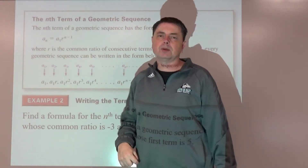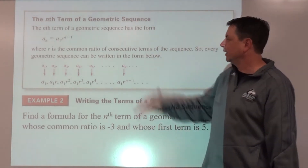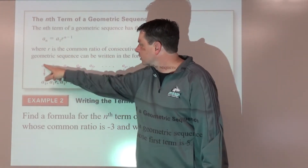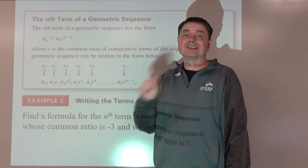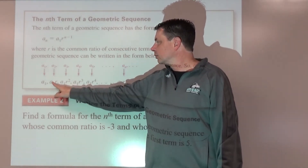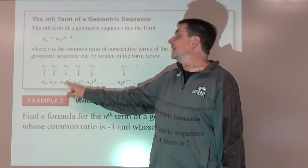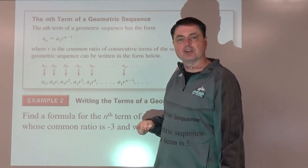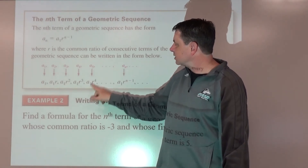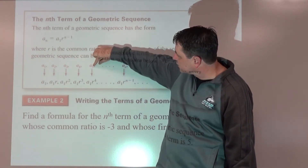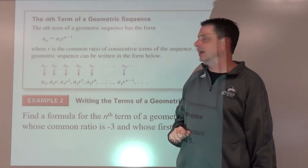You can see how that pattern works: the first term is a-sub-1, the second term is that times r, the third term is that times r again, and so on — continually multiplying by r. So it's a-sub-1 times r to the exponent that is one less than its position n.